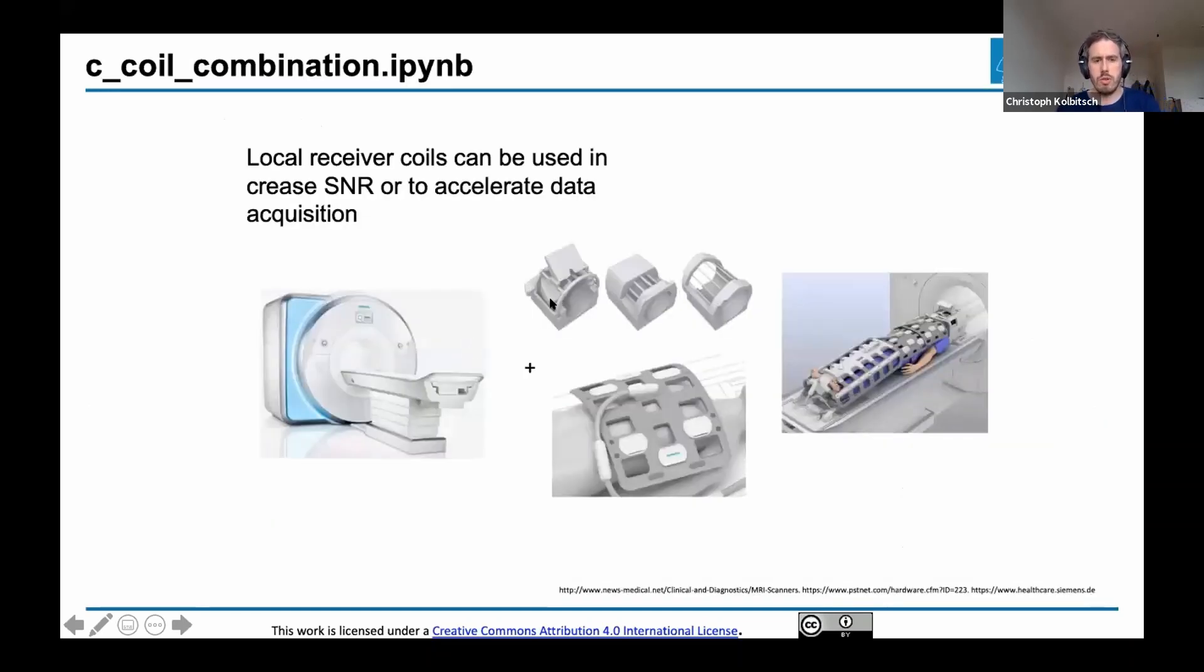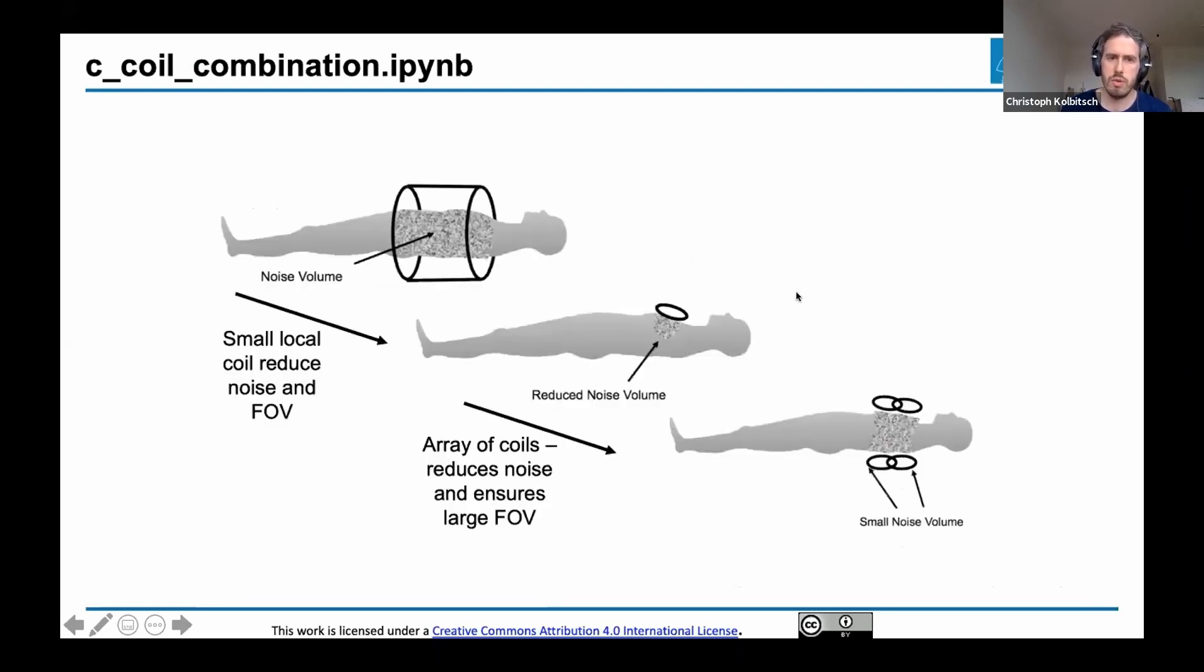Coming back to the coil combination notebook, the MRI scanner uses B0 to create our signal and code it spatially, then uses additional receiver coils to receive the signal. The main reason this was developed is to improve SNR. Here's an example of a big coil which covers everything we want to image, but everything visible by this coil can produce noise, which isn't good if we only want to acquire a small slice.